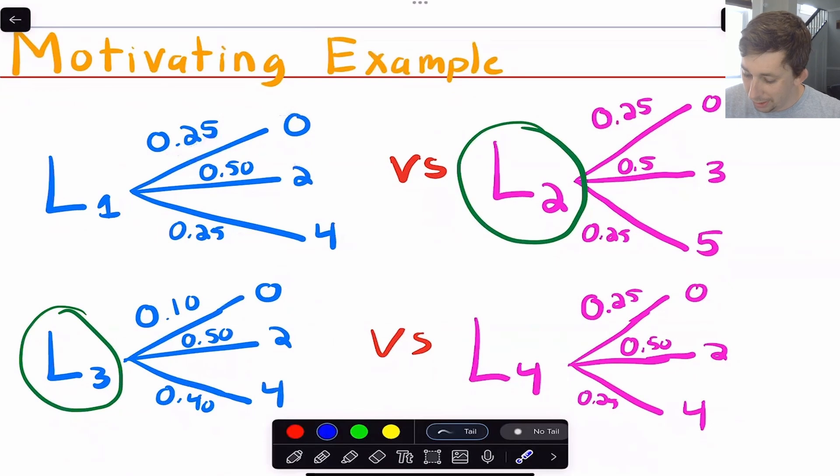And then Lottery 2, you've got a 25% chance of 0, a 50% chance of 3, and a 25% chance of 5. So if I asked you which lottery would you prefer, you would most likely go for Lottery 2. And the reason you would go for Lottery 2 is because you're going to get a higher payoff at each percentage than in Lottery 1.